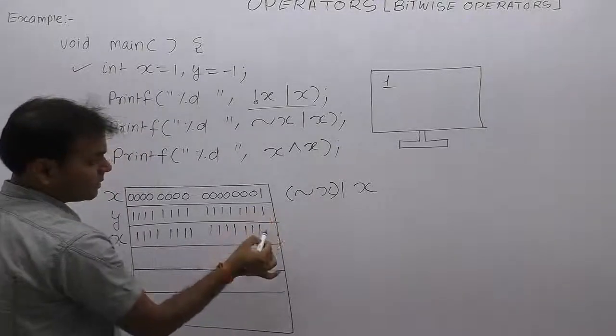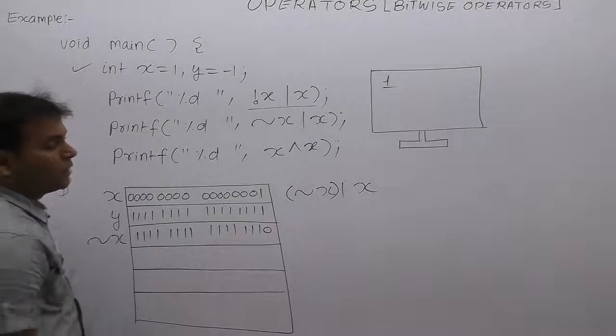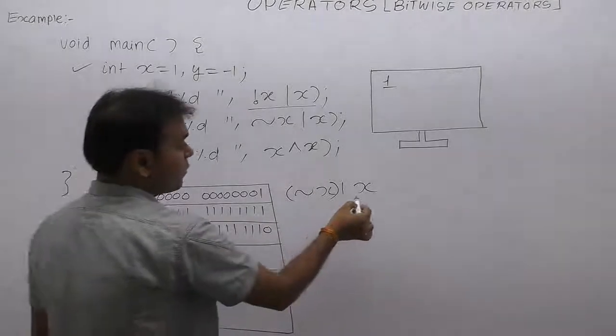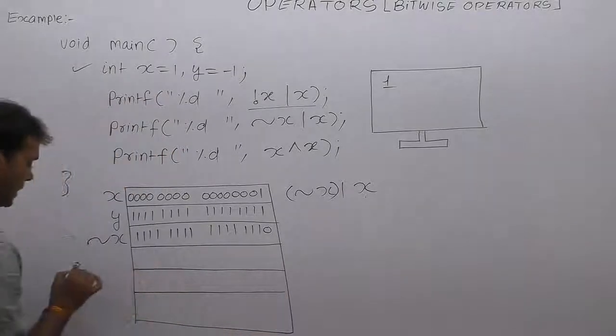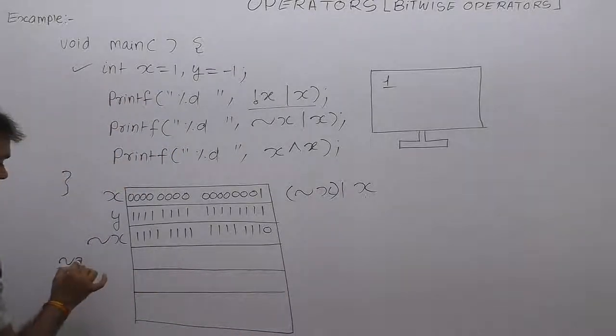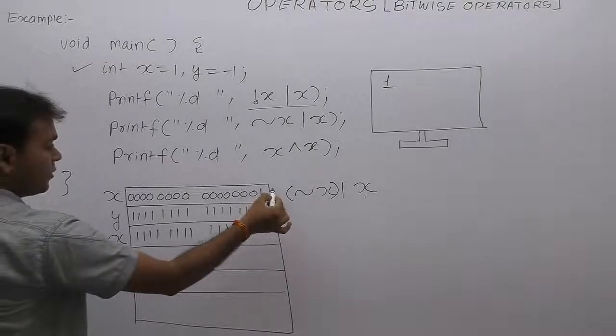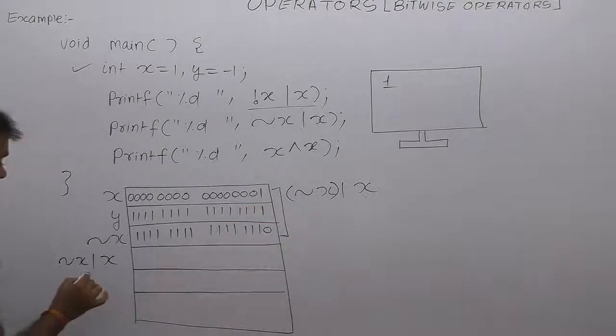Next is once compliment of x OR operation with x. This means two operands. In OR operation, if both bits are 0, then the result is only 0.